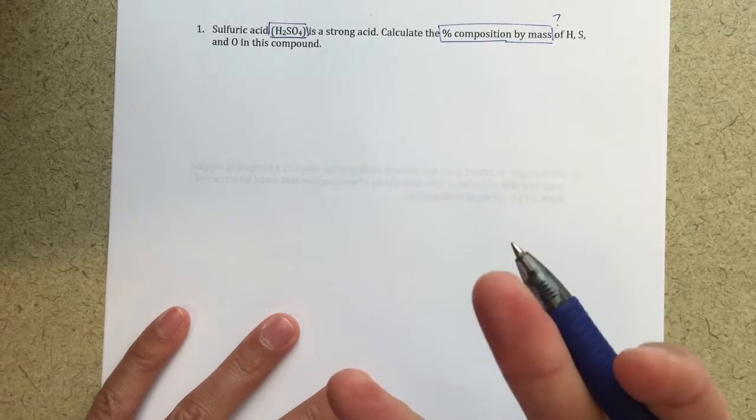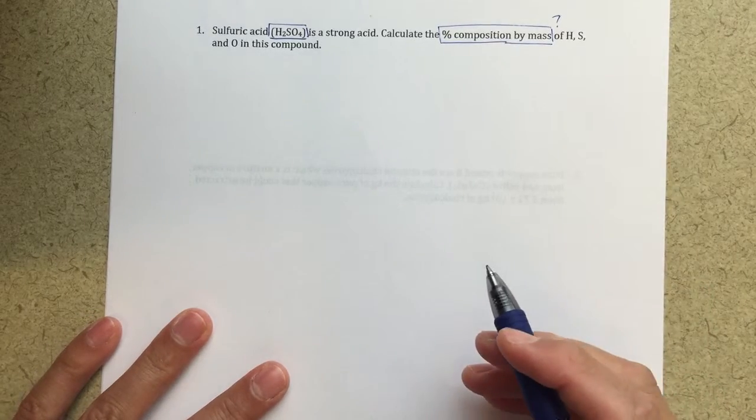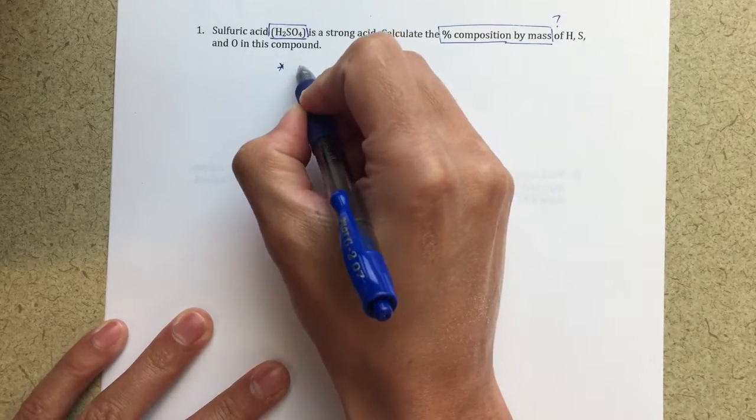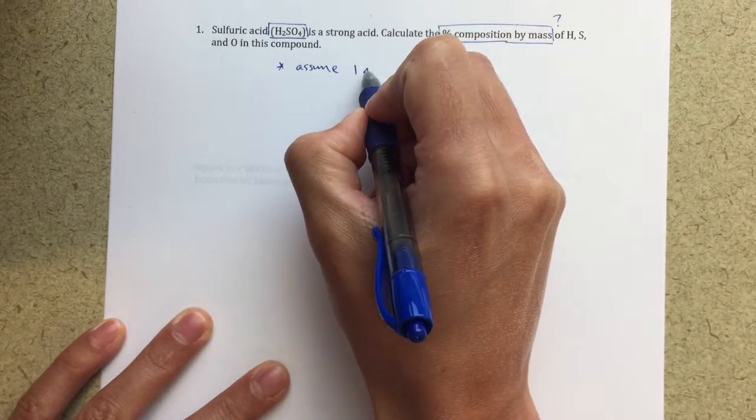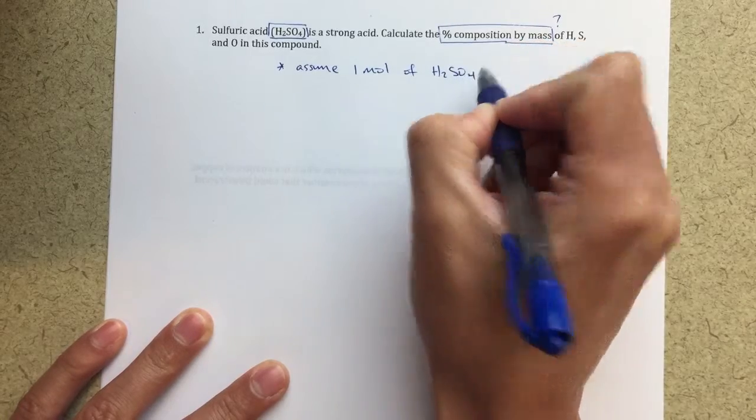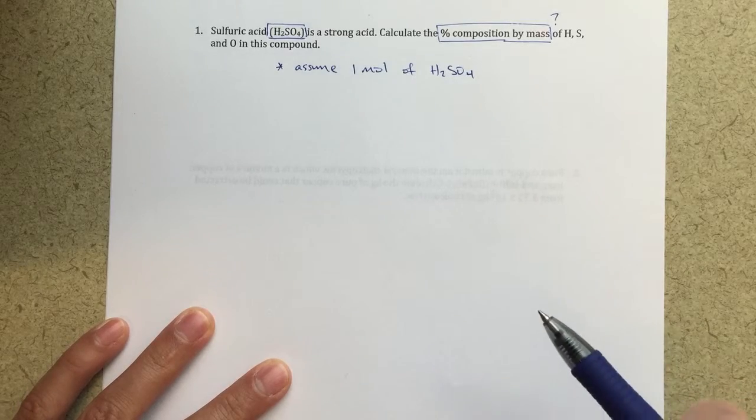And the first trick, I guess you might say, that we should really think about is assuming one mole. So, as it turns out, if I assume that I have one mole of H2SO4, that's going to allow me to basically solve this problem a lot easier, it's going to really help out.